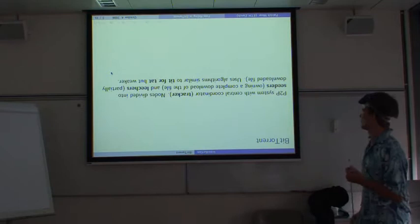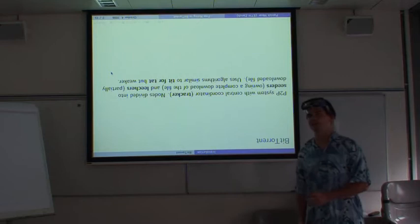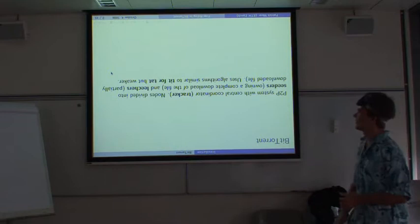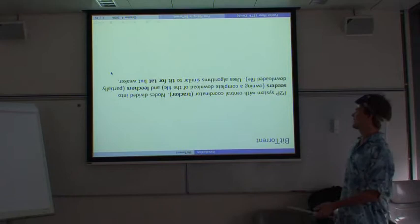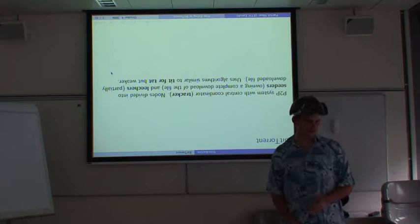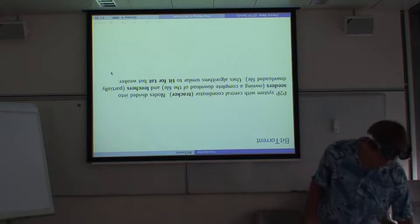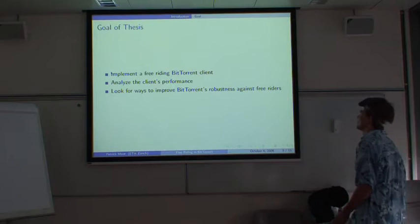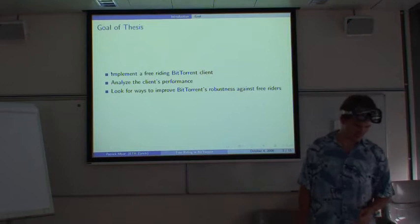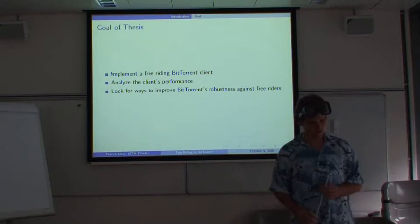My thesis was about BitTorrent. BitTorrent is a peer-to-peer system that you probably all know. There are seeders in this system - those are the people that already have the whole file they're sharing. And there are leechers, which are still in progress to downloading the file. BitTorrent uses some kind of tit-for-tat-ish algorithm, but not exact tit-for-tat. We'll look at that later on. So the goal of my thesis was to implement a free-riding BitTorrent client, to analyze its performance, and to look for ways to improve BitTorrent and to make free-riding as impossible as possible.